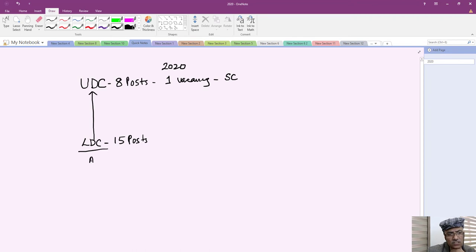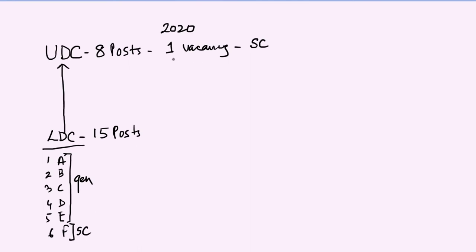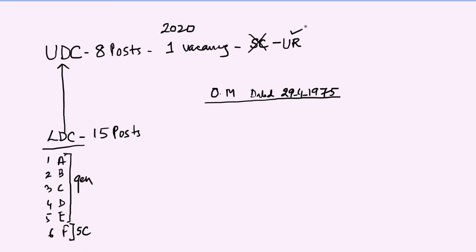In the seniority list of Lower Division Clerk, the persons are listed as A, B, C, D, E, F and so on. Everybody in this seniority list is general, and one person — say Mr. F — is Scheduled Caste. Now there is a single vacancy for Scheduled Caste in the year 2020. According to the Government of India Office Memorandum dated 29th April 1975, this single vacancy will not be treated as reserved — it will be treated as unreserved. So Mr. A, being the senior-most, will be promoted to the post of Upper Division Clerk.